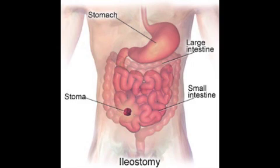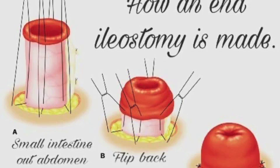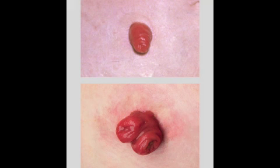An ileostomy is constructed using the small intestines. A portion of small intestine is either partially surgically cut or fully surgically cut in half to create a stoma. The intestine is pulled out through a surgically constructed opening in the abdomen, where the small intestine is pulled through, turtlenecked and sutured to the abdomen. The contents from the ileostomy will flow through this newly constructed stoma.